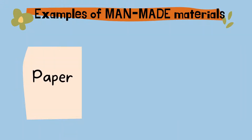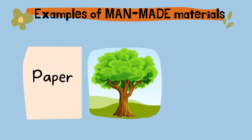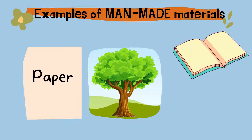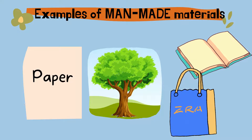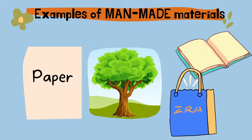Paper is a man-made material that comes from trees. People use paper to make things like books, paper bags, boxes, and many other things.